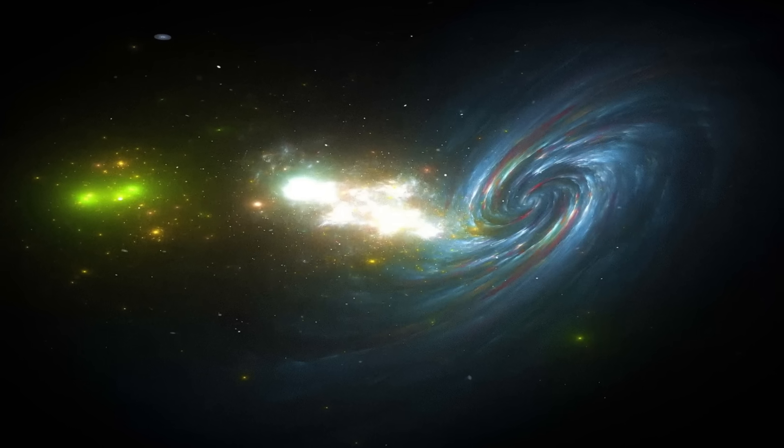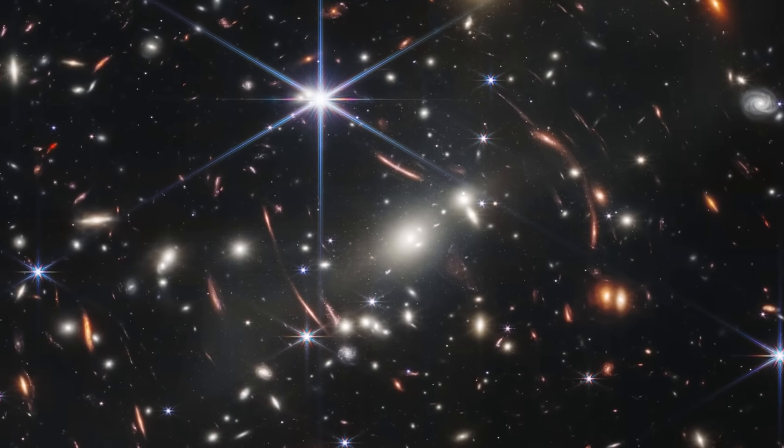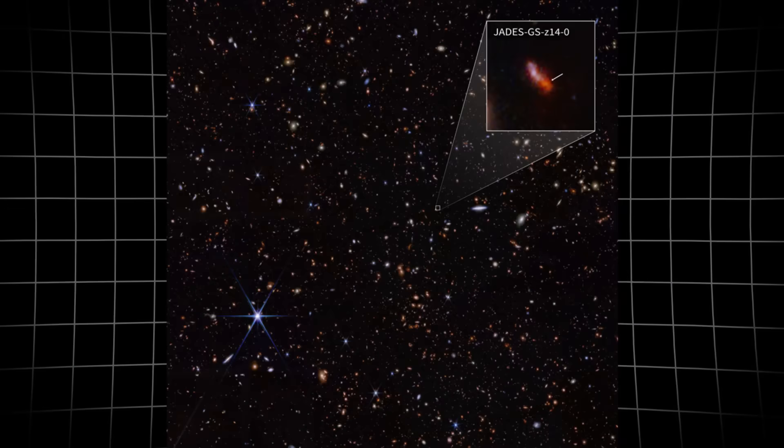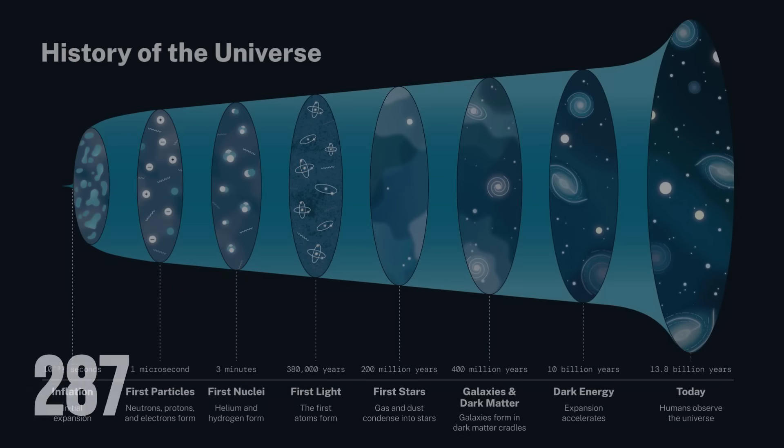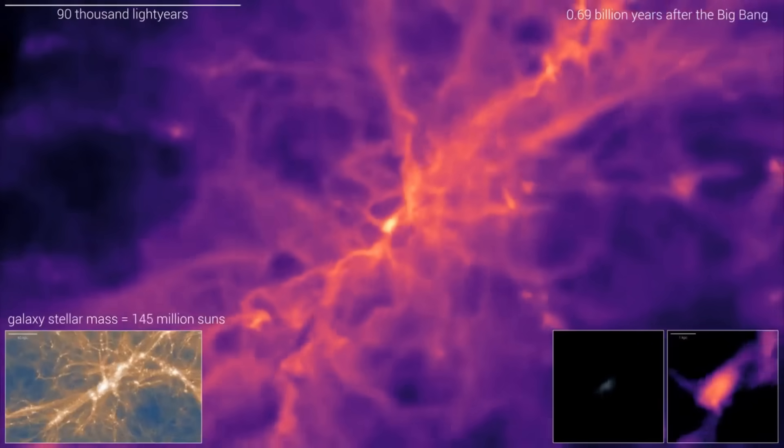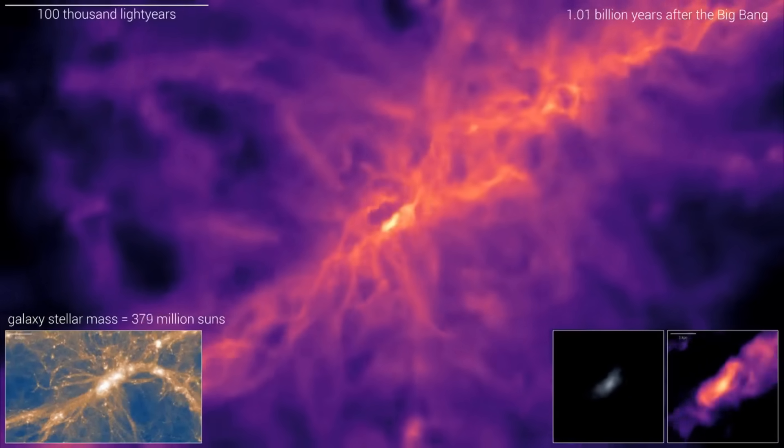The discoveries flooding in from Webb's new map are forcing astronomers to rethink the story of how the universe built itself. Galaxies and black holes are now known to have formed earlier and grown faster than models allowed. Even the most distant confirmed galaxies, like JADES-GS-z14-0 and MOISEM-z14, are already shining with heavy elements just 280 to 290 million years after the Big Bang. This means that the cycles of star birth, death, and enrichment had to start almost immediately, compressing what was thought to be a slow, billion-year process into a cosmic sprint.